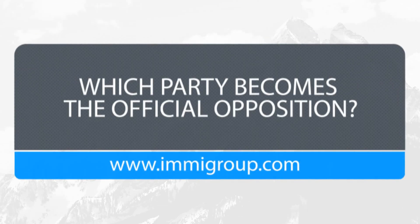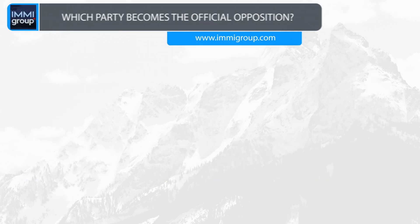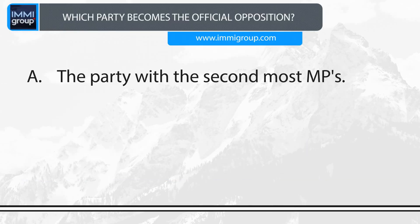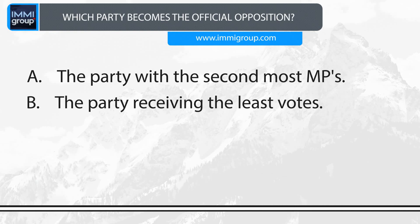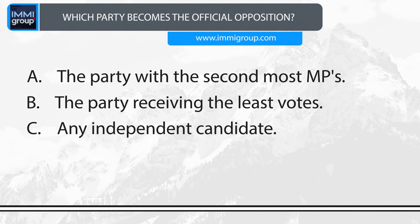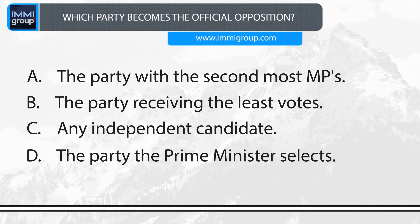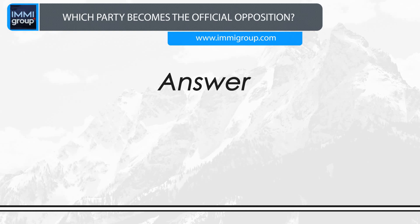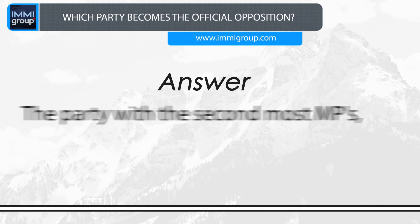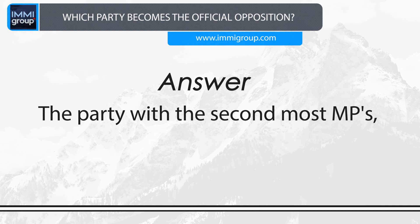Which party becomes the official opposition? A. The party with the second most MPs. B. The party receiving the least votes. C. Any independent candidate. D. The party the Prime Minister selects. Answer: The party with the second most MPs.